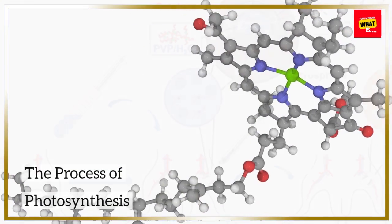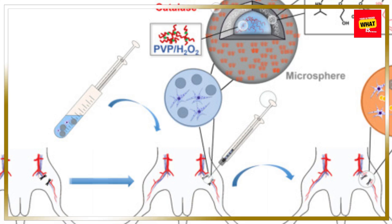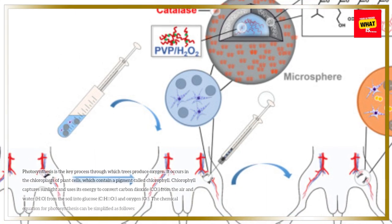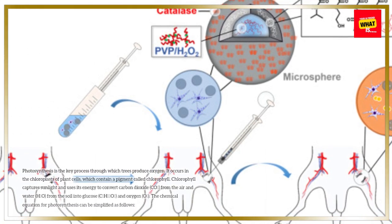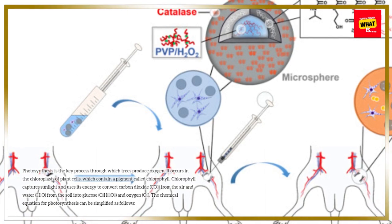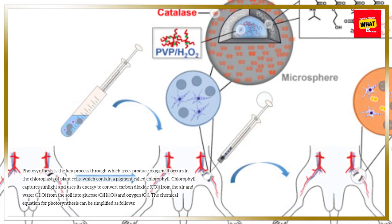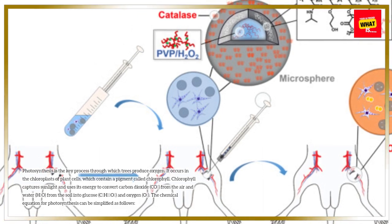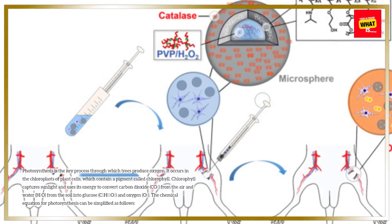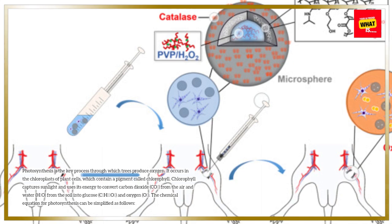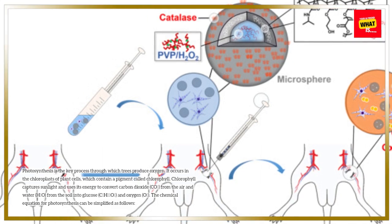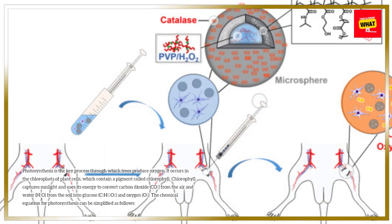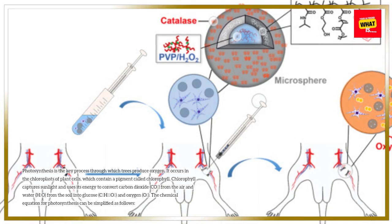Photosynthesis is the key process through which trees produce oxygen. It occurs in the chloroplasts of plant cells, which contain a pigment called chlorophyll. Chlorophyll captures sunlight and uses its energy to convert carbon dioxide (CO₂) from the air and water (H₂O) from the soil into glucose (C₆H₁₂O₆) and oxygen (O₂).